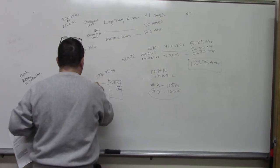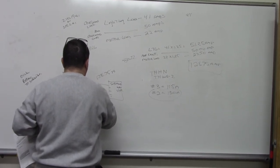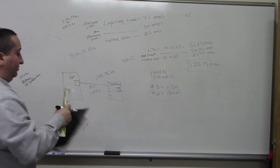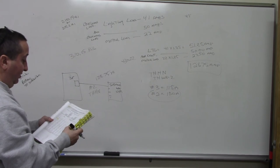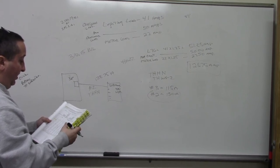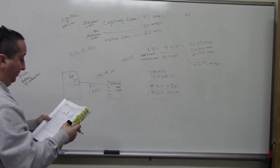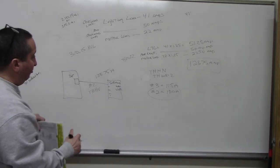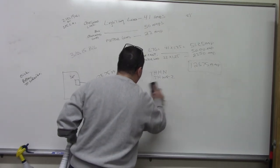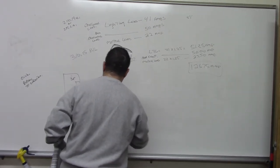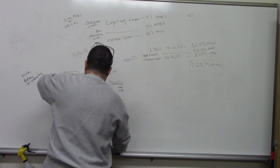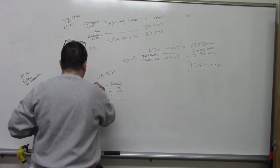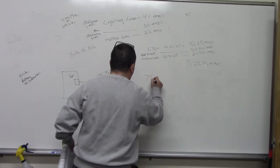A number 2 THHN. Okay? Actually, we could use it, but we can't use it because we have to be in a 75-degree column. So I am wrong and I apologize because there's no derating. So the answer is going to be, actually, the answer is going to be a number 1 wire. A number 1. Okay?